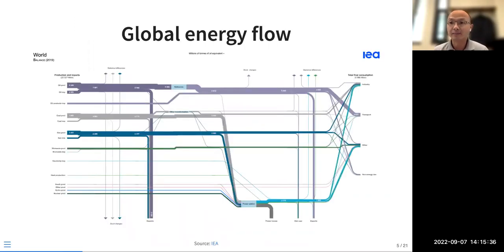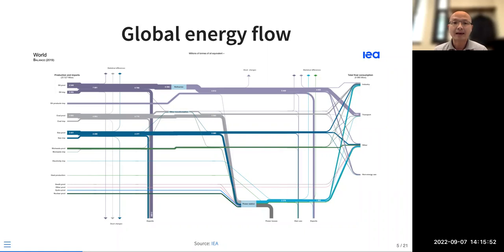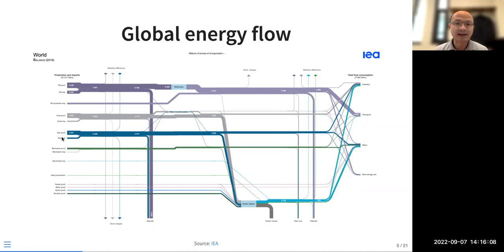To give a sense of the global energy flow: when we talk about energy, we always need to be clear about what energy supply or demand we are discussing, and the conversion between them. The width of lines in the flow diagram shows the relative share of energy in that space. Oil, coal, and gas — fossil fuels — still provide the main part of our primary energy.